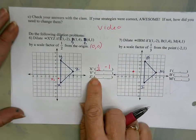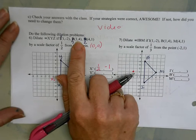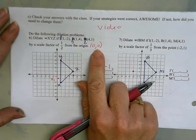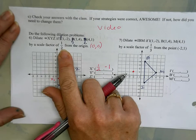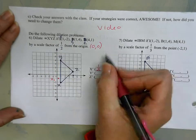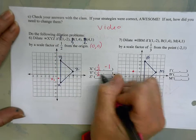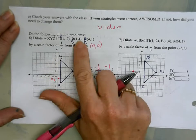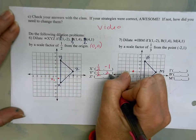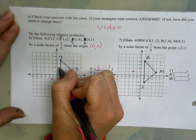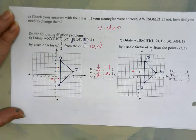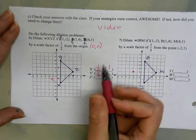For Y, our coordinates are (1,4). Since it's coming from the origin, I could just multiply my coordinates by my scale factor. So half of 1 is 1/2, half of 4 is 2. So my new coordinates for Y are 1/2 and up 2. If I wanted to use the counting strategy again...